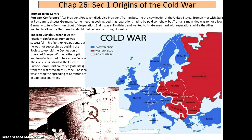Truman takes control at the Potsdam Conference. Roosevelt died and Truman — who dropped the bombs on Hiroshima and Nagasaki — became the new leader. Truman met with Stalin at Potsdam to discuss Germany. Both agreed reparations had to be paid, but Truman's main idea was to not allow Germany to turn communist out of desperation. Stalin was still ruthless and wanted to hit Germany hard with reparations, while the Allies wanted to allow Germans to rebuild their economy through industry.